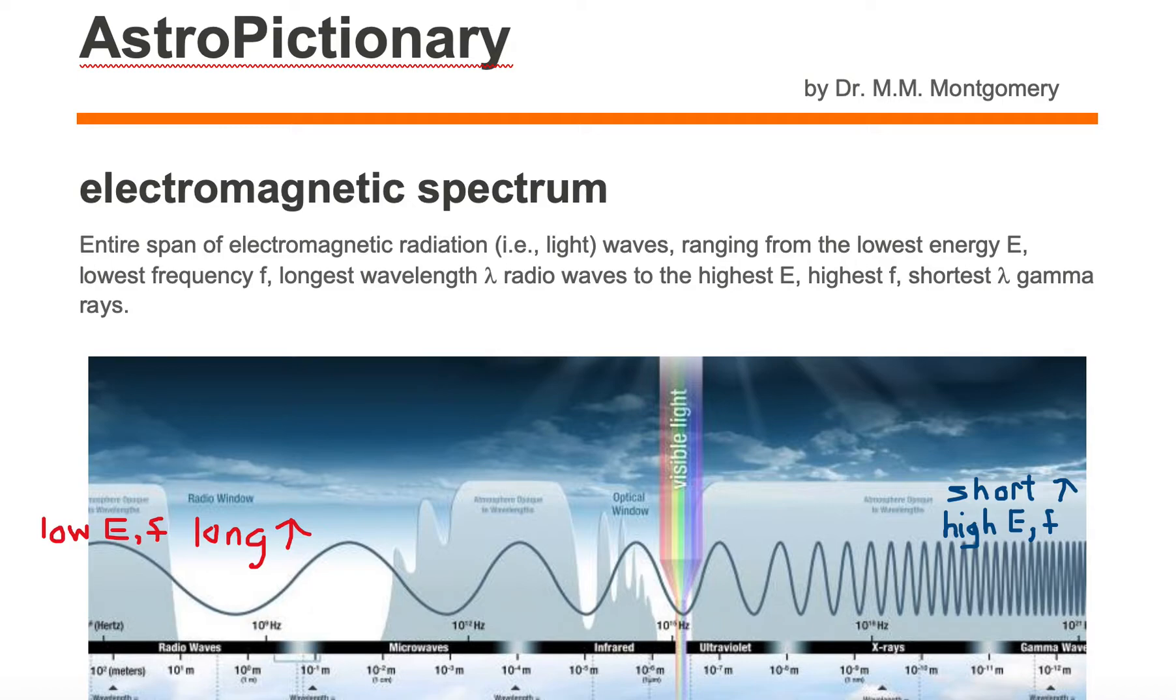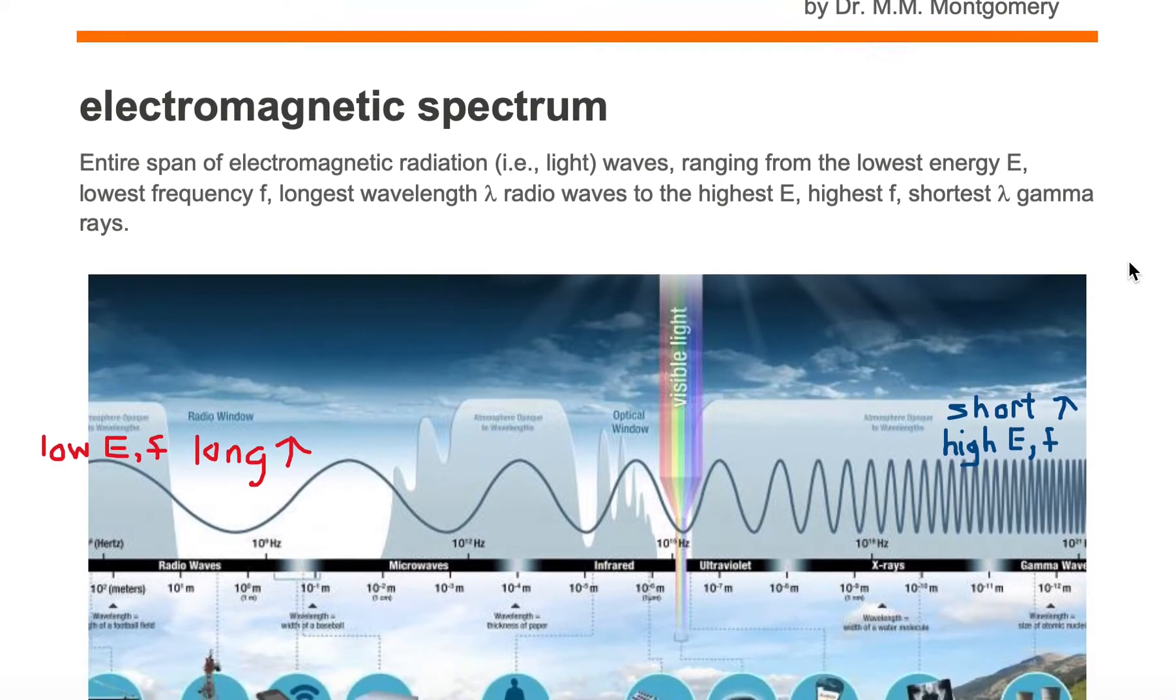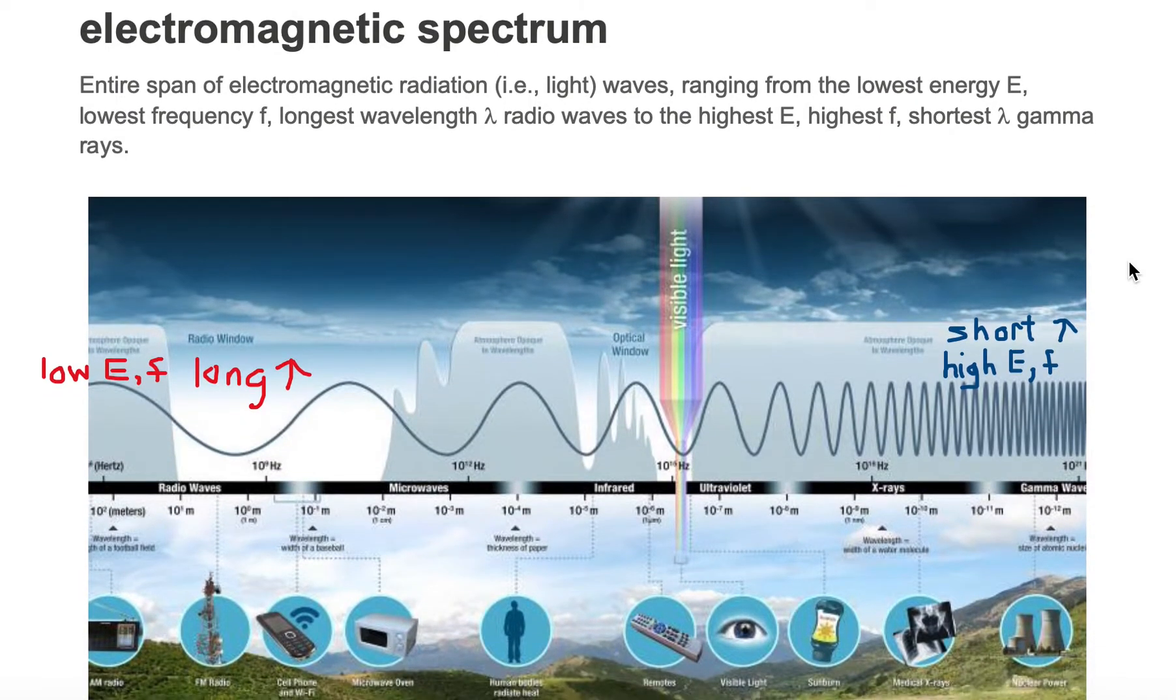So electromagnetic spectrum is a span of light waves. Here we are looking at a cartoon diagram generated by NASA that is showing us a span of electromagnetic or light waves. We have on one end, the left end, we've got our long waves, hence long wavelengths, and at the very other end, we've got these very, very short waves or short wavelengths.